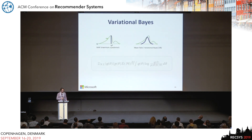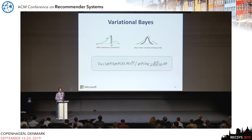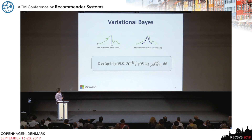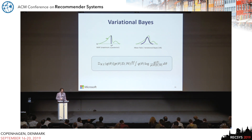The optimization follows variational Bayes — you can see the update steps in the paper. The idea is to write down the posterior distribution of the parameters and minimize the KL divergence between the true posterior and some approximation of the posterior.